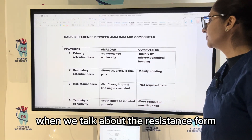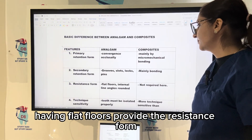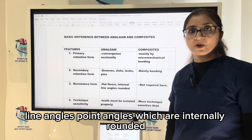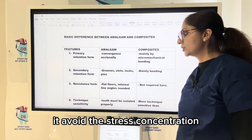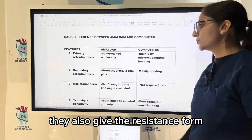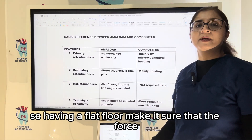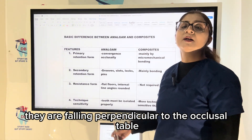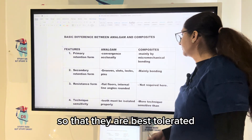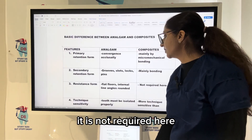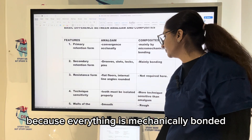When we talk about the resistance form, having flat floors provides the resistance form. Line angles and point angles which are internally rounded avoid stress concentration and also give resistance form. A flat floor makes sure that forces fall perpendicular to the occlusal table so they are best tolerated. For composite, this is not required because everything is mechanically bonded.